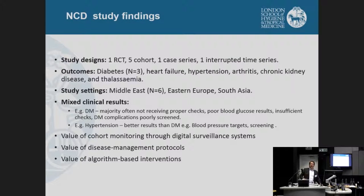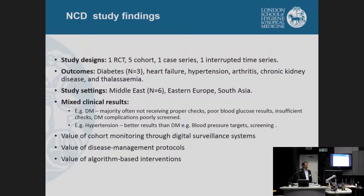In terms of study findings: when thinking about effectiveness, ideally we'd want a controlled trial or at least use of controls. There was only one randomized controlled trial, and that was on the use of traditional medicine for Tibetan refugees in India. The vast majority were case series, interrupted time series analyses, cohort studies using prospective surveillance data, with main outcomes of diabetes, heart failure, and hypertension. The vast majority of studies — six of the eight — were from the Middle East, predictably given the burden of disease in the region.